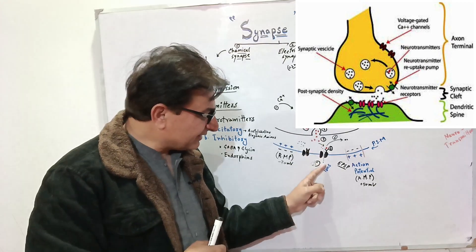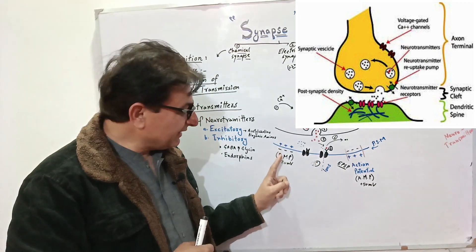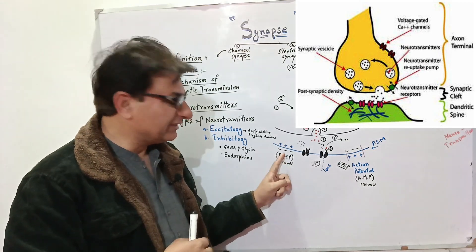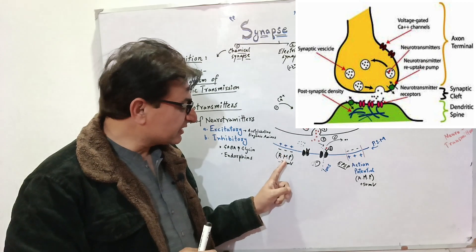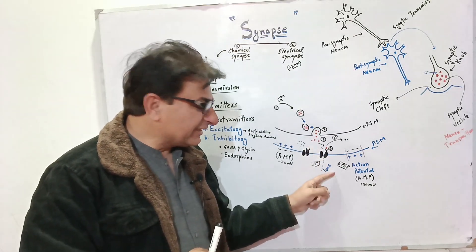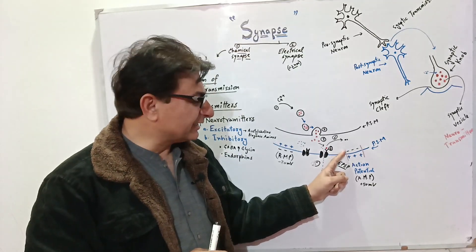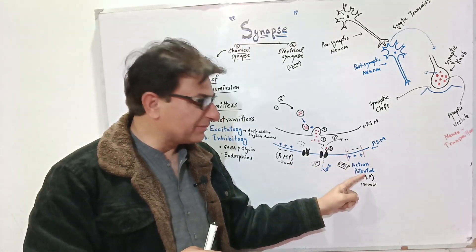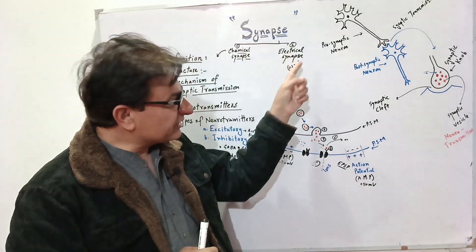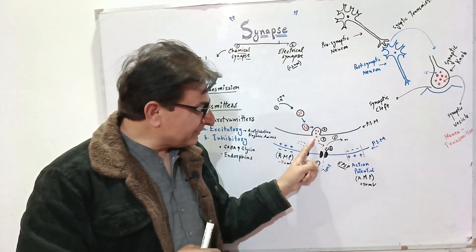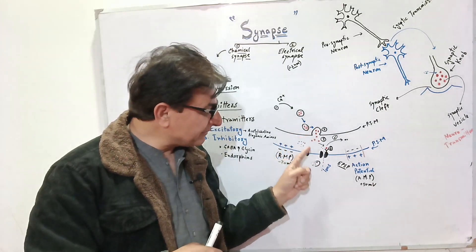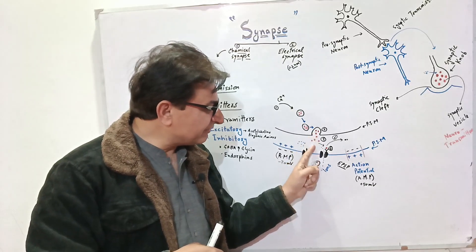As sodium rushes into the post-synaptic neuron through the post-synaptic membrane, it causes a shift of the electric potential from the resting membrane potential of minus 70 millivolts to an action potential of plus 50 millivolts. So the action potential from the pre-synaptic neuron — via these chemicals — can generate a new action potential in the post-synaptic membrane. This is why information travels in the form of chemicals called neurotransmitters.